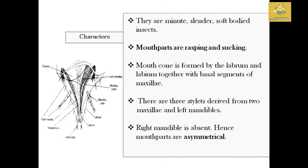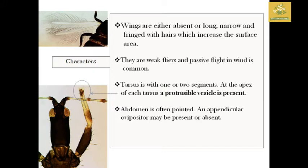The right mandible is absent in these insects, making the mouthparts asymmetrical in nature. Wings are either absent or long, narrow, and fringed with hairs, which increases the surface area. They are weak flyers and passive flight in the wind is common. The tarsus is one or two segmented, and at the tip of each tarsus there is a protrusible vesicle. The abdomen may bear an appendicular ovipositor, which may be present or absent.